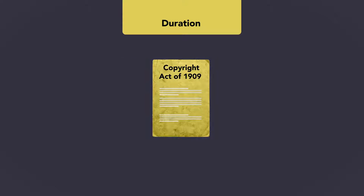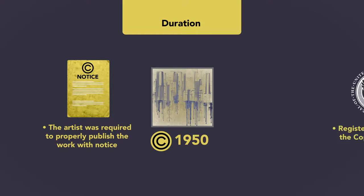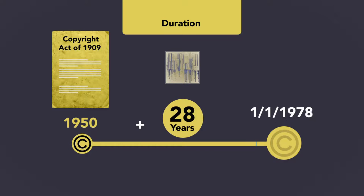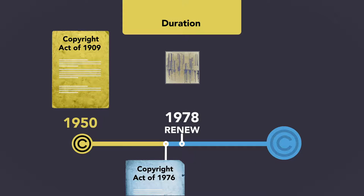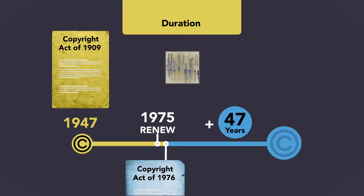To illustrate how this transition under the Copyright Act of 1976 functioned, consider a painting which first received copyright protection in 1950. The artist was required to properly publish the work with notice, or register it with the Copyright Office. That work was subject to the Copyright Act of 1909, and was in its initial term as of January 1, 1978. If the copyright owner requested renewal during 1978, the owner would receive a renewal providing copyright protection for an additional 47 years, until 2025. If the painting had received copyright protection in 1947 and was renewed in 1975, its renewal period could have been extended to 47 years, making the copyright valid until 2022.